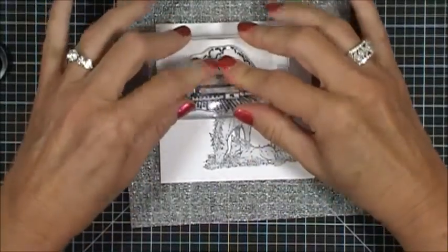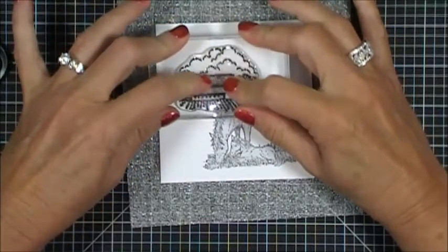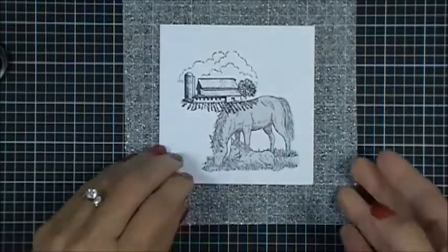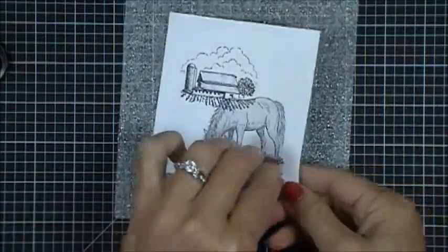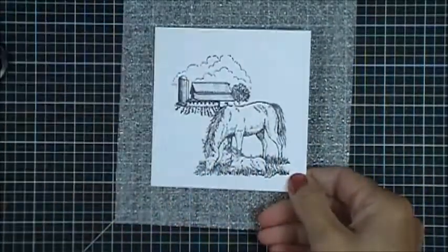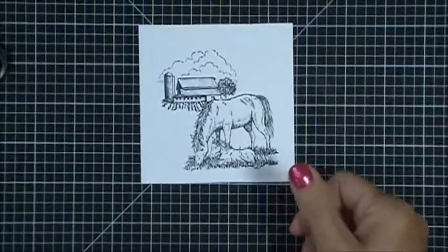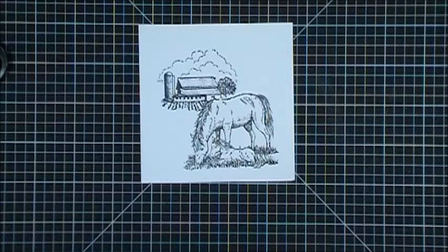So I'm going to stamp it there and now we'll take the mask off and there you have it. Now it looks like the horse is in the foreground and the barn with the silo is in the background.